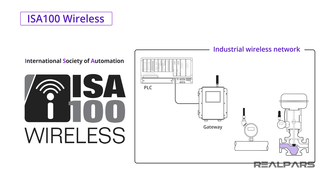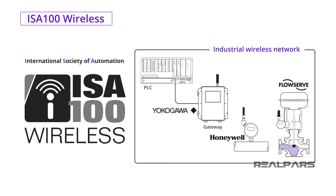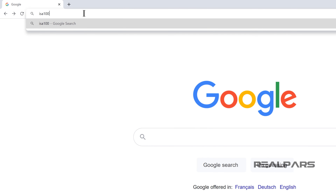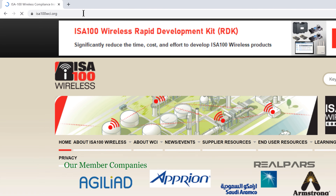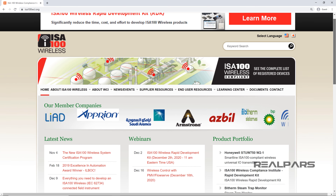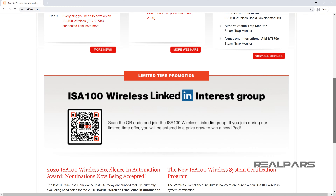One thing particularly notable about the ISA100 Wireless Protocol is that it is designed to work with wireless devices from all major manufacturers, such as Honeywell, FlowServe, Yokogawa, and Spirax Sarco, to name a few. This means when you use ISA100 Wireless as your industrial wireless network, you are not tied into a single vendor solution and have the freedom to choose from a wide range of manufacturers that support this protocol. To learn more about ISA100 Wireless, head over to isa100wci.org — a link will be added to the video description as well.